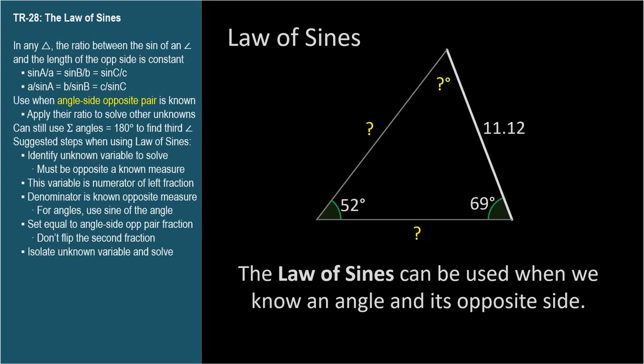When we use the law of sines, we set up two fractions equal to each other, where we know three of the numbers, including an angle-side opposite pair. And we want to know the value of the fourth variable.